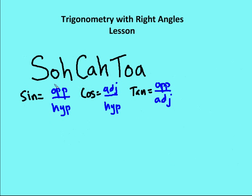So just to review SOH CAH TOA: sine is the opposite side over the hypotenuse, cosine is the adjacent side over the hypotenuse, tangent is the opposite over the adjacent. Then I have cotangent — the reciprocal of tangent — secant, which is the hypotenuse over adjacent or the reciprocal of cosine, and cosecant, which is the hypotenuse over the opposite side.